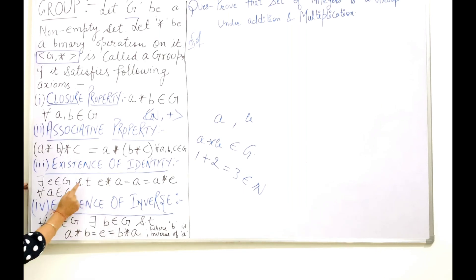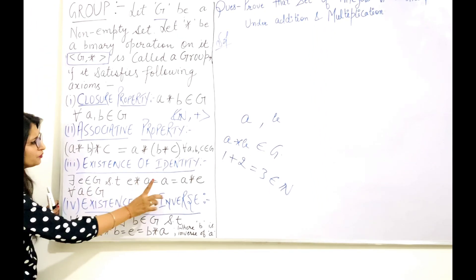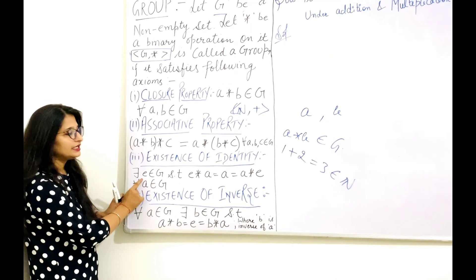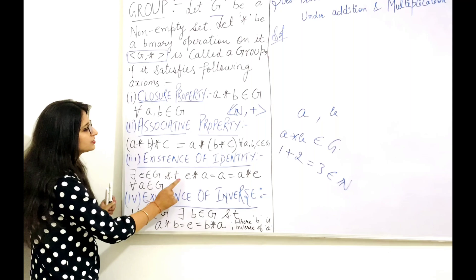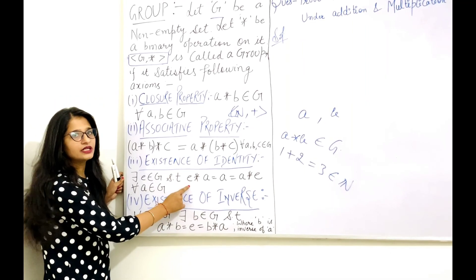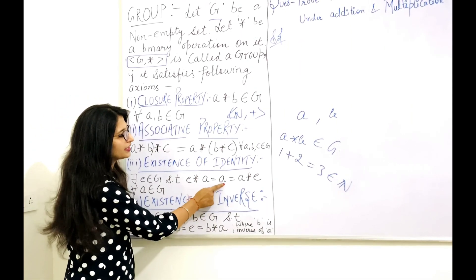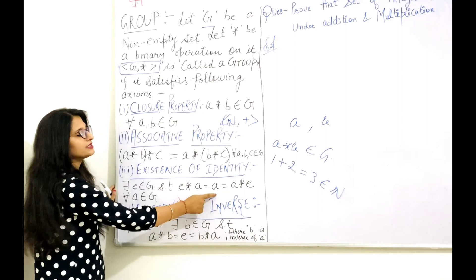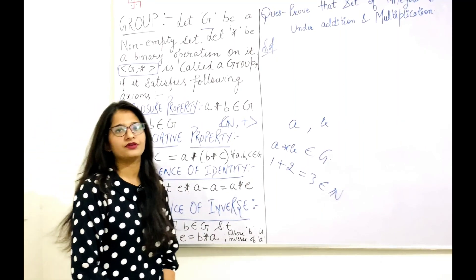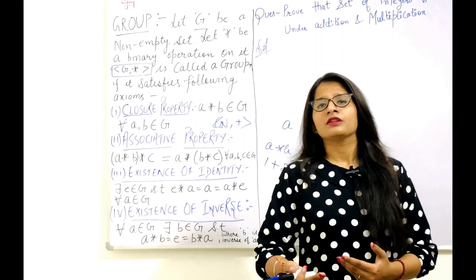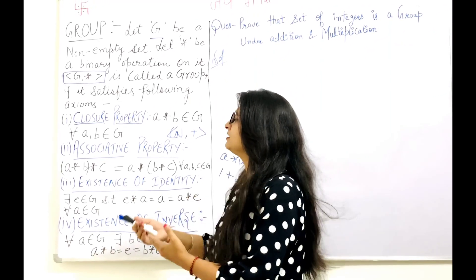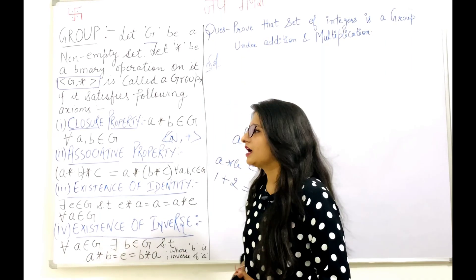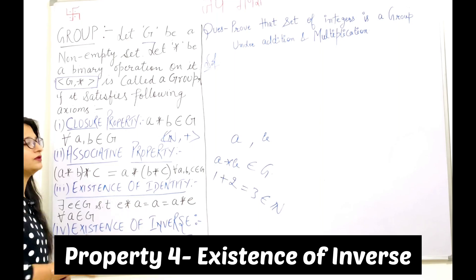To check the identity property, you take any element from the given set and there must exist one element E belonging to that set such that when you apply the operation between A and E, that element A remains the same — whether you do E star A or A star E, the answer will be A. If you are not getting an identity, then that set is not forming a group.